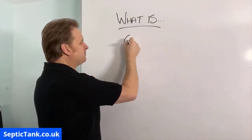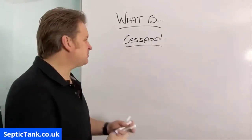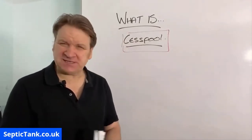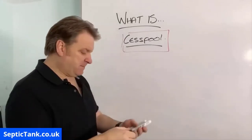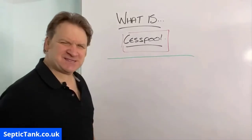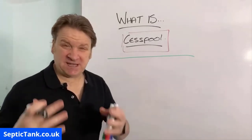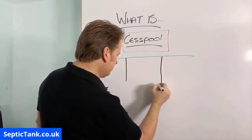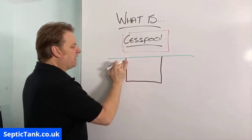So what is a cesspool? This pertains to houses, properties, or business units that aren't connected to the main sewers. A cesspool is basically a sealed unit. Drawing it here under the grass line — it's a box shape — a cesspool will have an inlet.